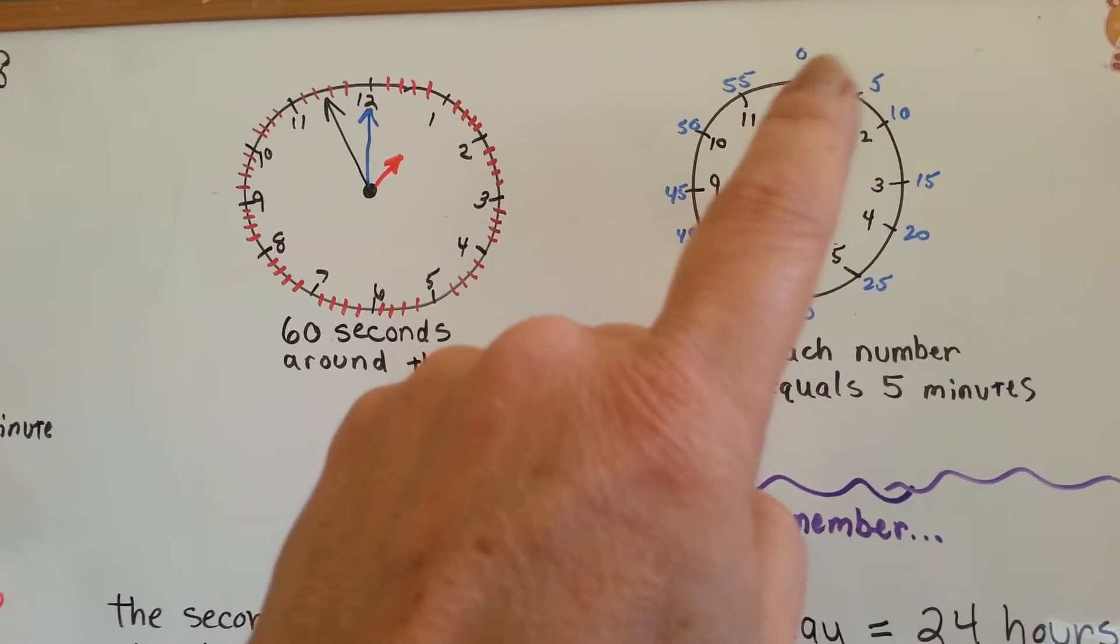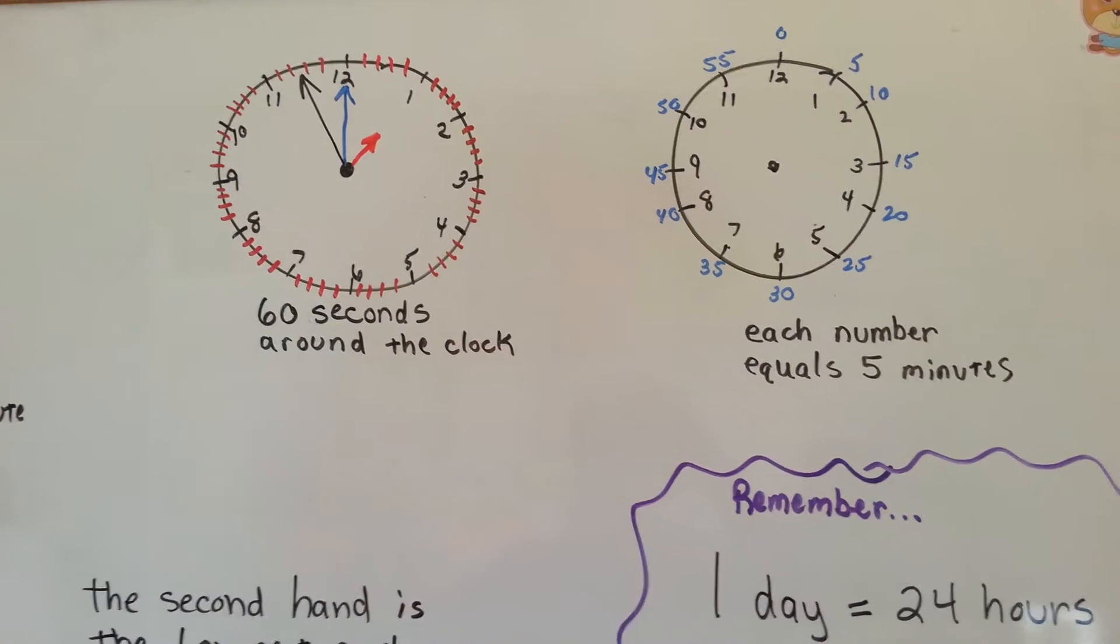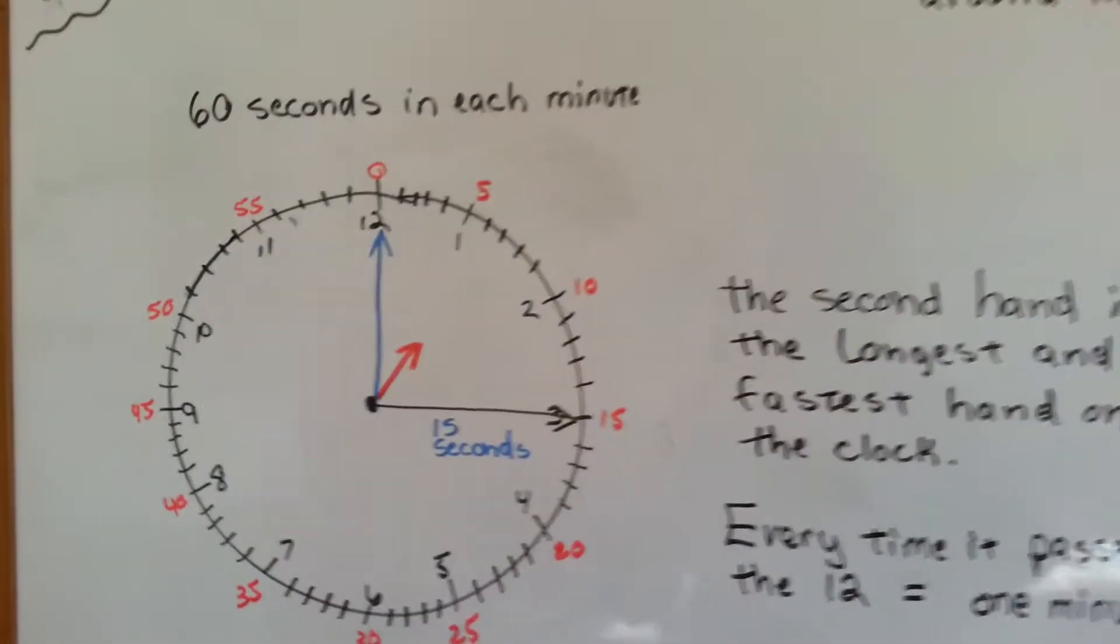Now remember, the minute hand counts by fives, and each number equals five and you can skip count. Well, the second hand does the same thing.